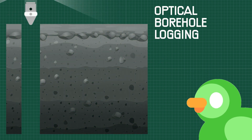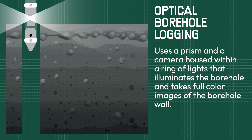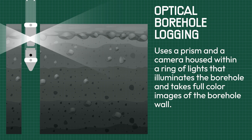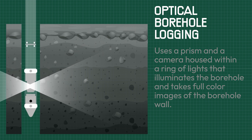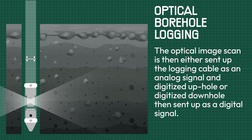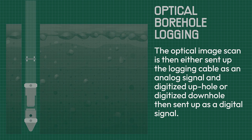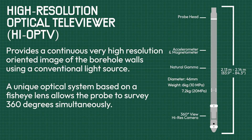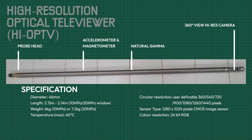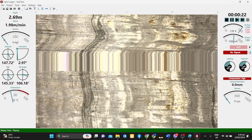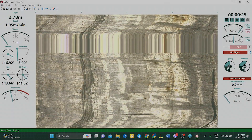The second method, optical borehole logging, uses a prism and a camera housed within a ring of lights that illuminates the borehole and takes full-color images of the borehole wall. The camera measures the intensity of the colour spectrum in red, green, and blue. The optical image scan is then either sent up the logging cable as an analogue signal and digitised uphole, or digitised downhole, then sent up as a digital signal. The high-resolution optical televiewer, or HI-OP TV, provides a continuous, very high-resolution oriented image of the borehole walls using a conventional light source. A unique optical system based on a fisheye lens allows the probe to survey 360 degrees simultaneously. This information is processed in real-time to produce a complete unwrapped image of the borehole oriented to magnetic north.